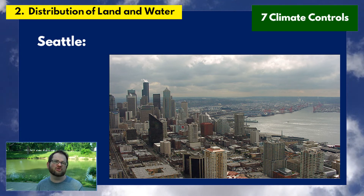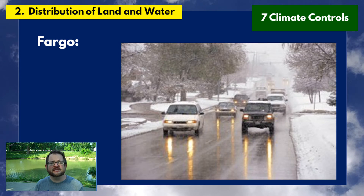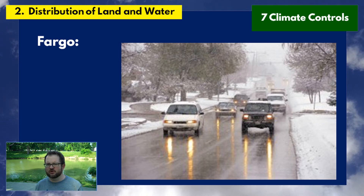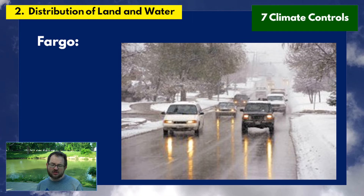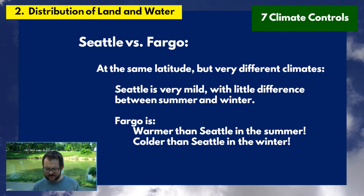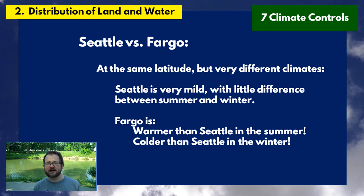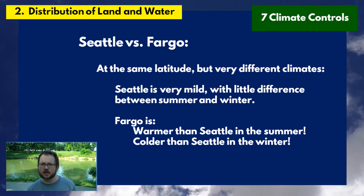Compare that to Fargo: it can still reach the 80s and 90s in summer, but in winter it gets really cold — maybe average highs in the teens in January. Even though they're at the same latitude, Fargo has a very continental climate and Seattle has a very marine climate. Seattle is mild with relatively little difference between summer and winter, whereas Fargo has a very extreme climate — warmer in summer and much colder in winter.